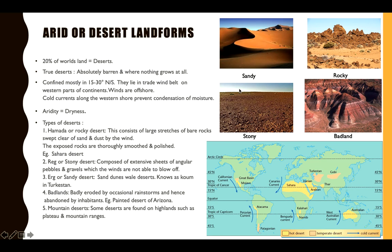Then we have Badlands. These are called badlands because there are very bad storms and habitation is not possible. When water comes during stormy weather and rainfall, it erodes the rocks and hills badly. The land is badly eroded by occasional storms and hence abandoned by inhabitants. An example is the Painted Desert of Arizona. Finally, some deserts are very high in elevation — these are called Mountain Deserts.